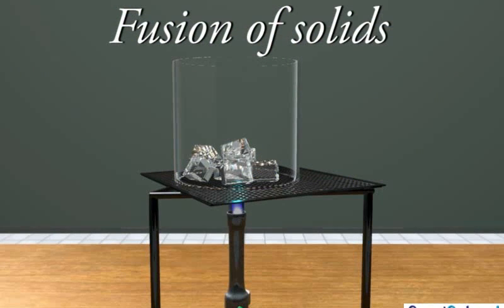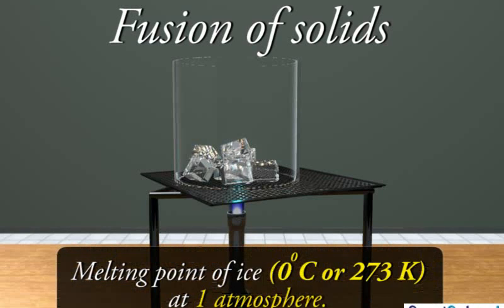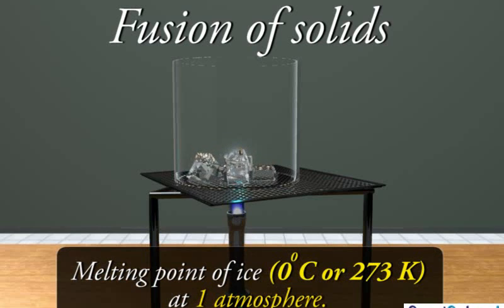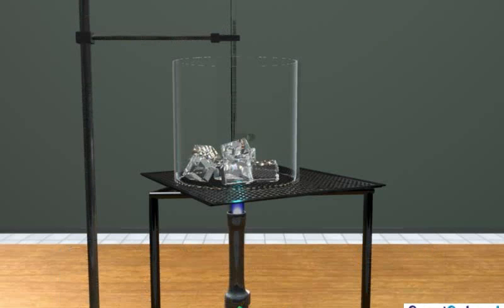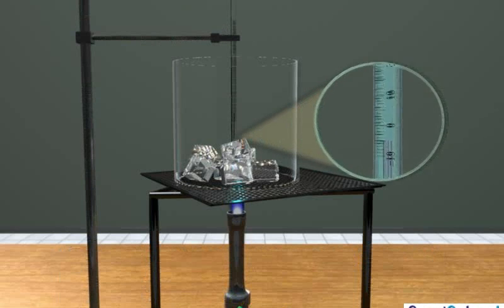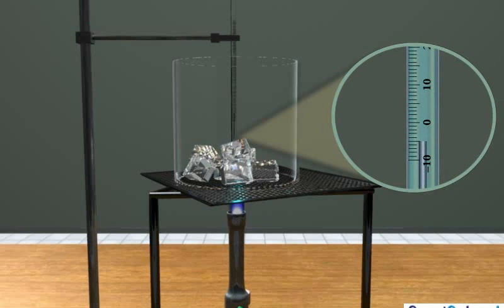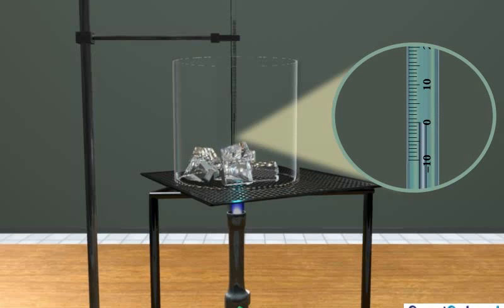Let us learn some more facts regarding fusion of solids. On heating some ice in a beaker at low flame, you will observe that ice melts at a temperature of 0 degree Celsius or 273 Kelvin at atmospheric pressure. It is also observed that even when the melting starts, the temperature of the system remains constant till the entire solid melts.